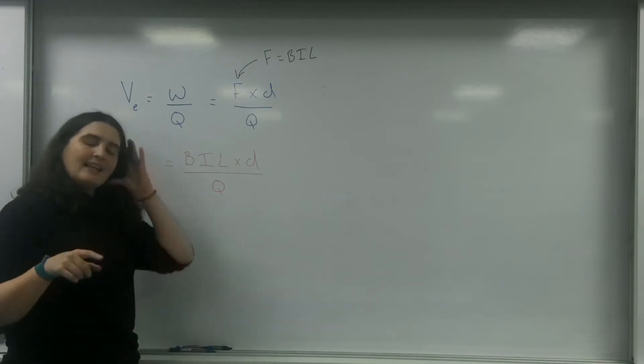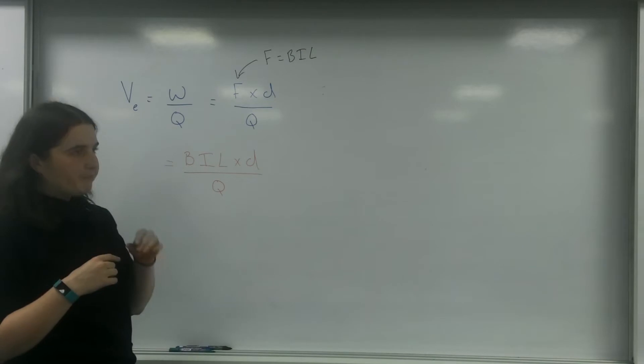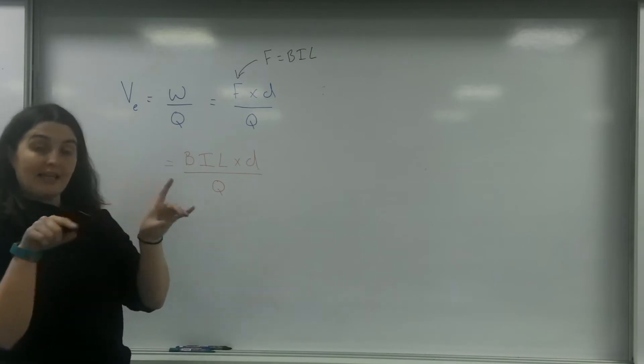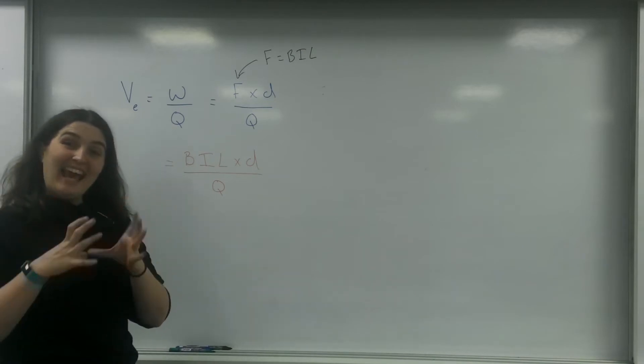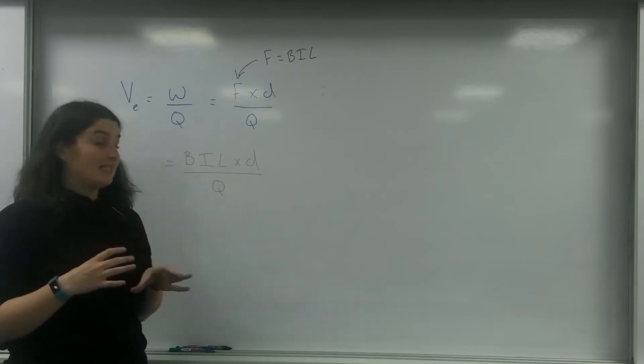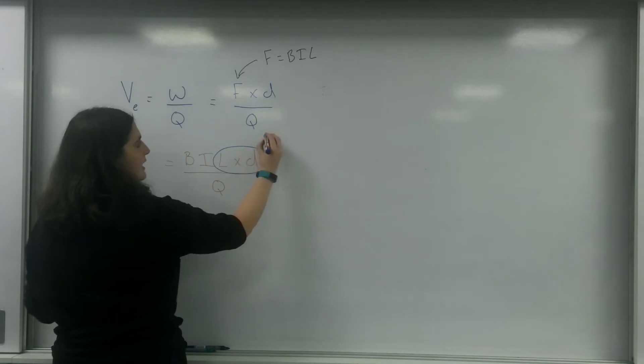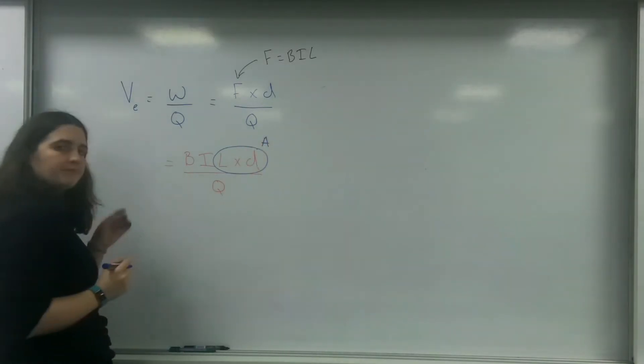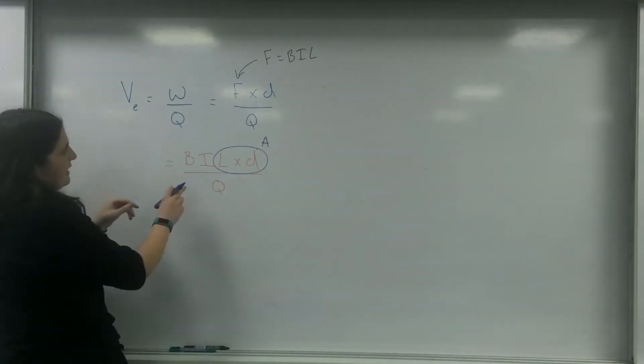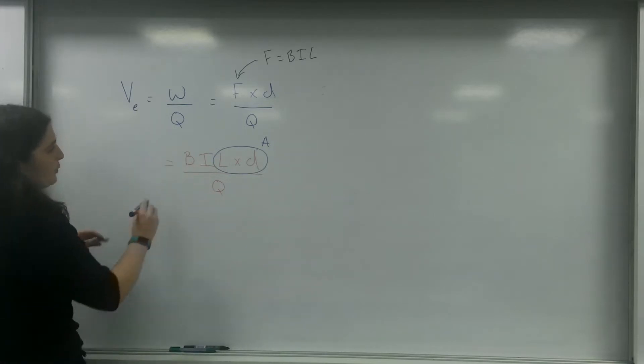Now, the length of the wire times by the distance, a length by a distance, is the area of the object itself. So this thing here is an area. This I and Q, this is actually quite important here.